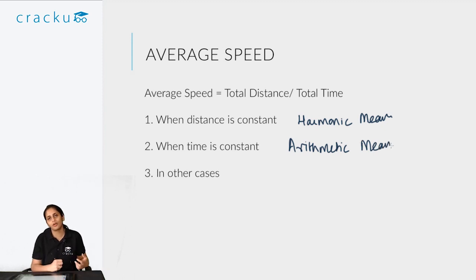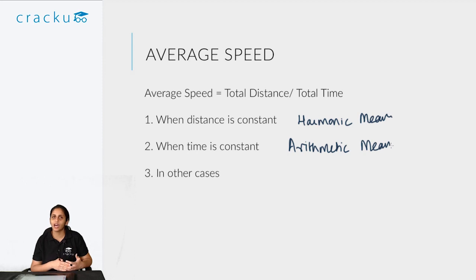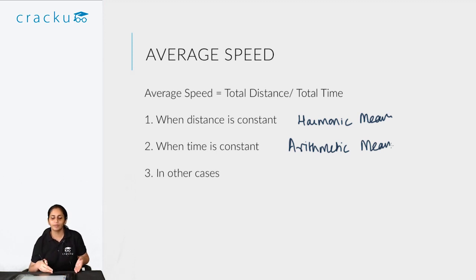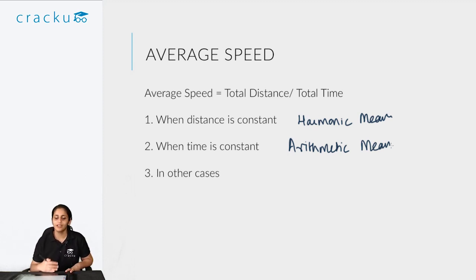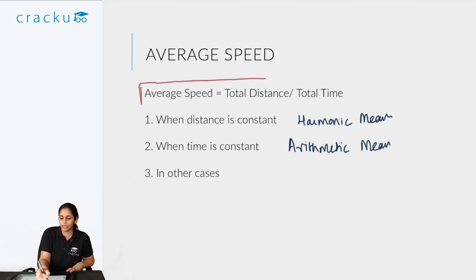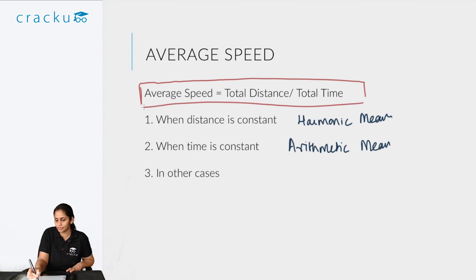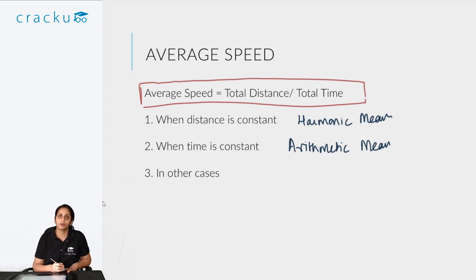However, we discourage this view of calculating average speed. No question that comes in actual CAT will be that easy — requiring just a harmonic mean or arithmetic mean. It will require you to apply constraints and write down an equation. The only real thing you need to remember is: average speed equals total distance divided by total time. Do not try to calculate based on harmonic or arithmetic mean — the time you save is not worth the risk of making an error.